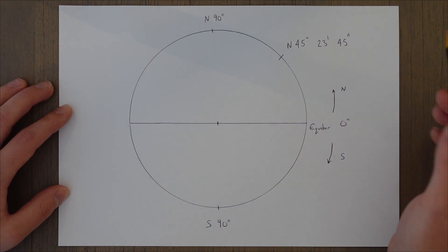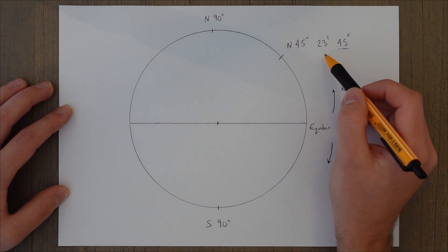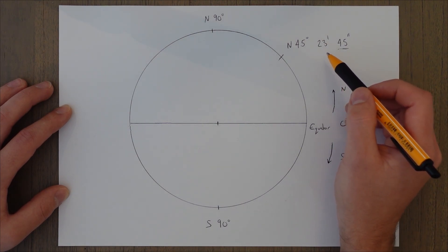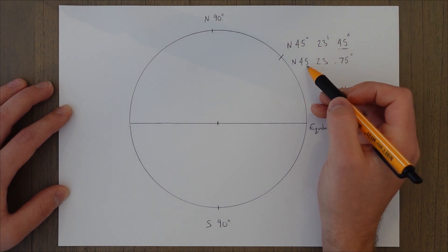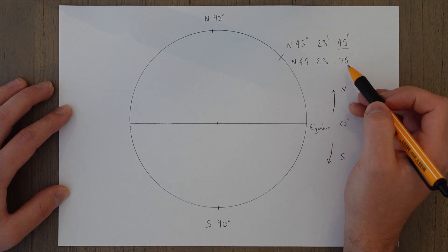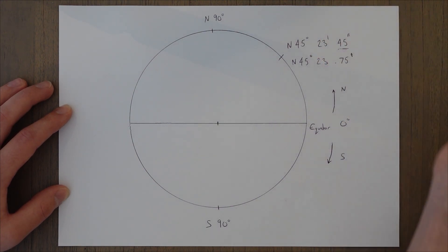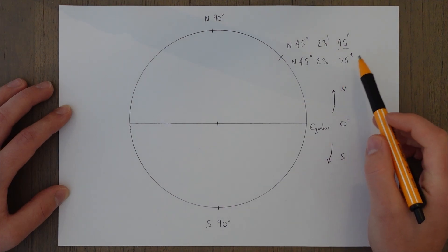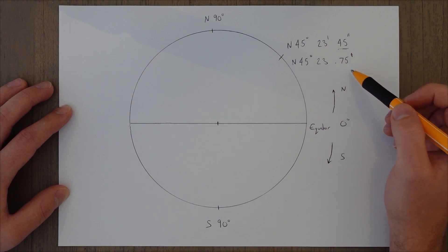Normally, in aviation, we don't actually use the seconds element and instead we put a decimal point after the minutes. So, in this example, you'd end up with north 45 degrees, 23.75 minutes. Obviously, it's 0.75 because it's base 60 and 45 is three-quarters of 60, so that's why it's 0.75.